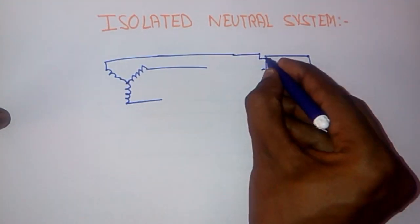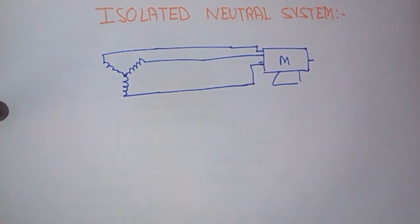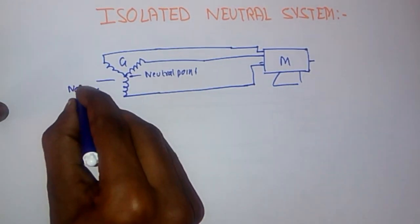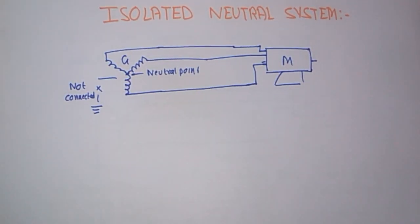So, this is the star generator is connected, giving supply to the three-phase motor, but its neutral point is not connected to the earth. This system is known as Isolated Neutral System.